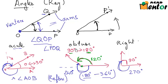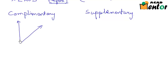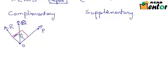Now that we know about acute, obtuse, right, and reflex angles, let's move on to complementary and supplementary angles. Whenever two angles share a common arm — for example angles POQ and QOR — they are complementary angles if the sum of both angles is 90 degrees. Whenever the sum of any two angles is 90 degrees, those angles are called complementary angles. If angle 1 plus angle 2 equals 180 degrees, then they are known as supplementary angles.